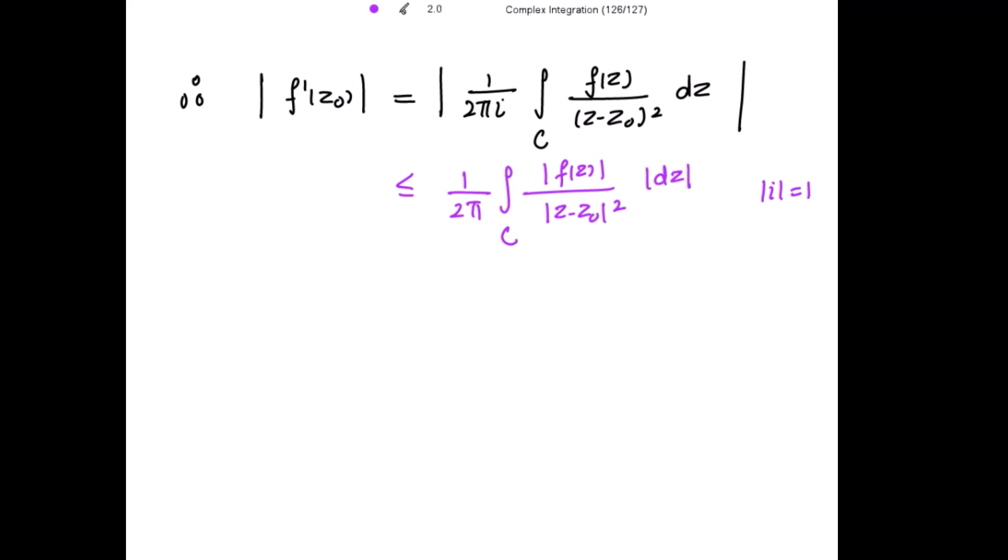This is the property for the mod I have used. And again I know that mod of f(z) is less than or equal to M. This we have supposed. And |z minus z_0| is equal to r.